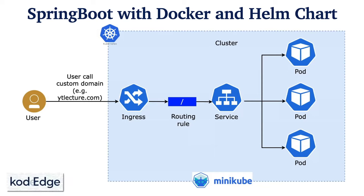Welcome to Code Edge. In this session we will see how to deploy a Spring Boot application in a Kubernetes cluster. We will use Minikube on our local system to create the cluster. We will first create a Spring Boot REST API, dockerize it, then create Kubernetes configuration using Helm chart. We will also see how to define a custom domain name in the ingress service so that requests get forwarded to the appropriate pod.